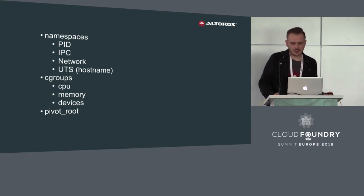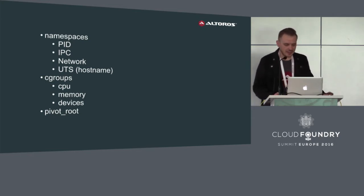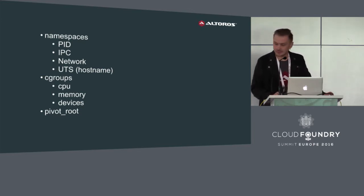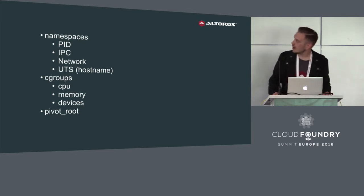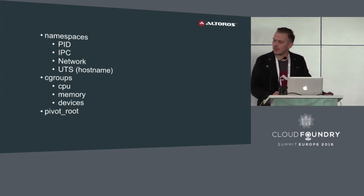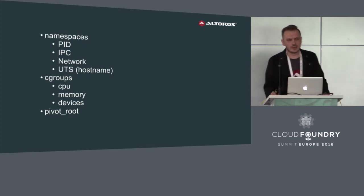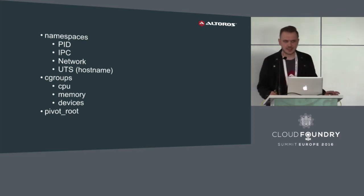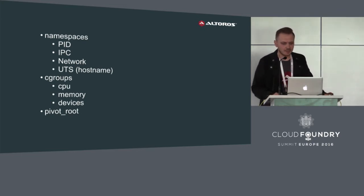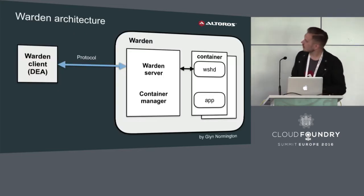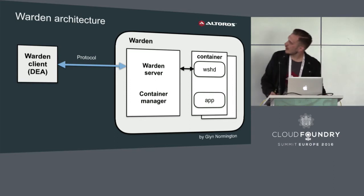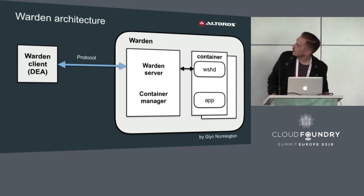In order to provide process isolation from the host operating system and from other processes, Linux namespaces were used — a kernel feature. Cgroups for resource limiting and management — also a kernel feature. And the pivot_root system call for file system isolation.